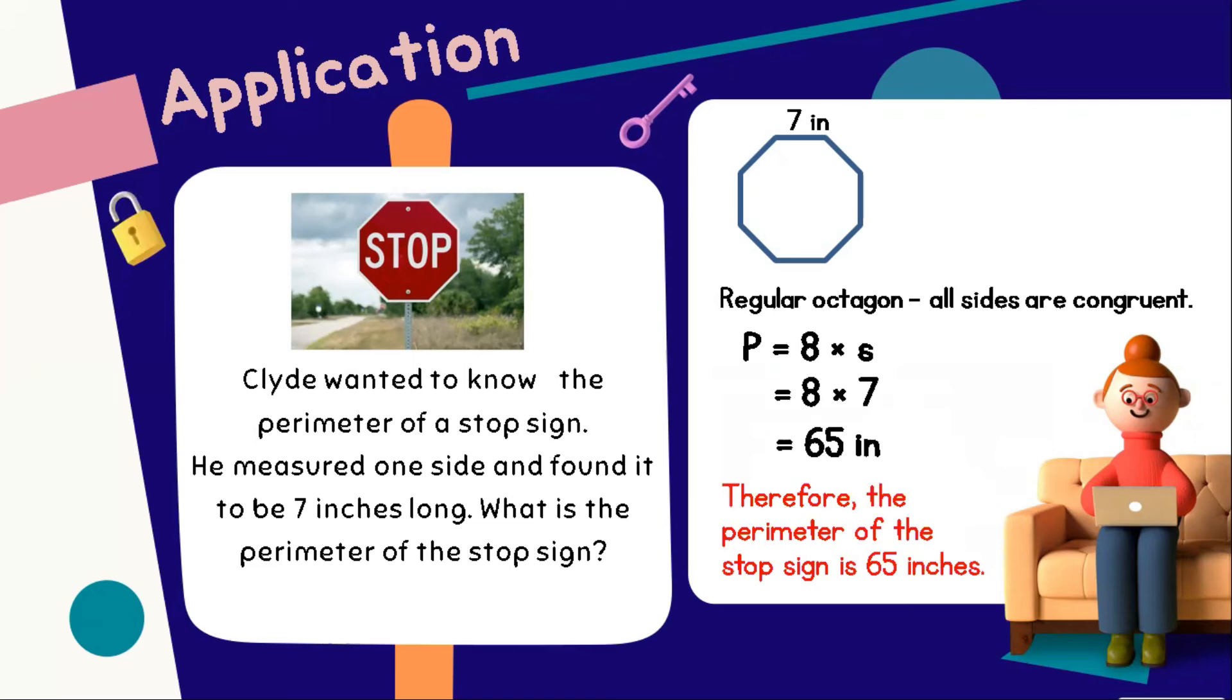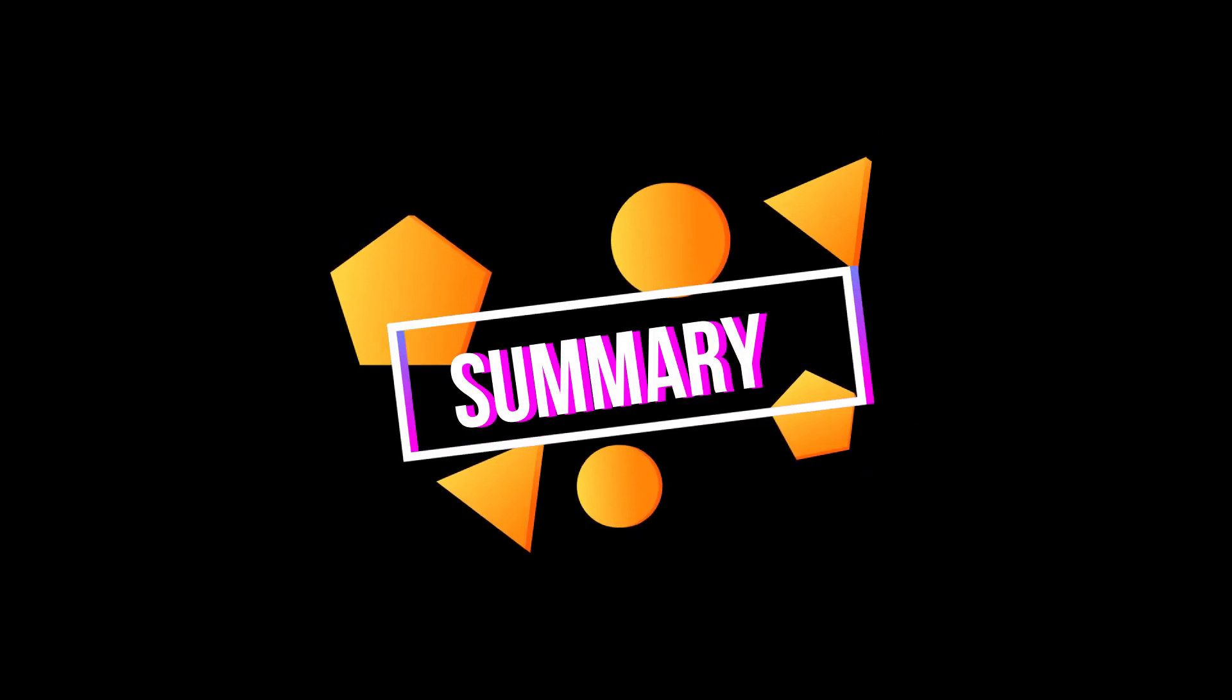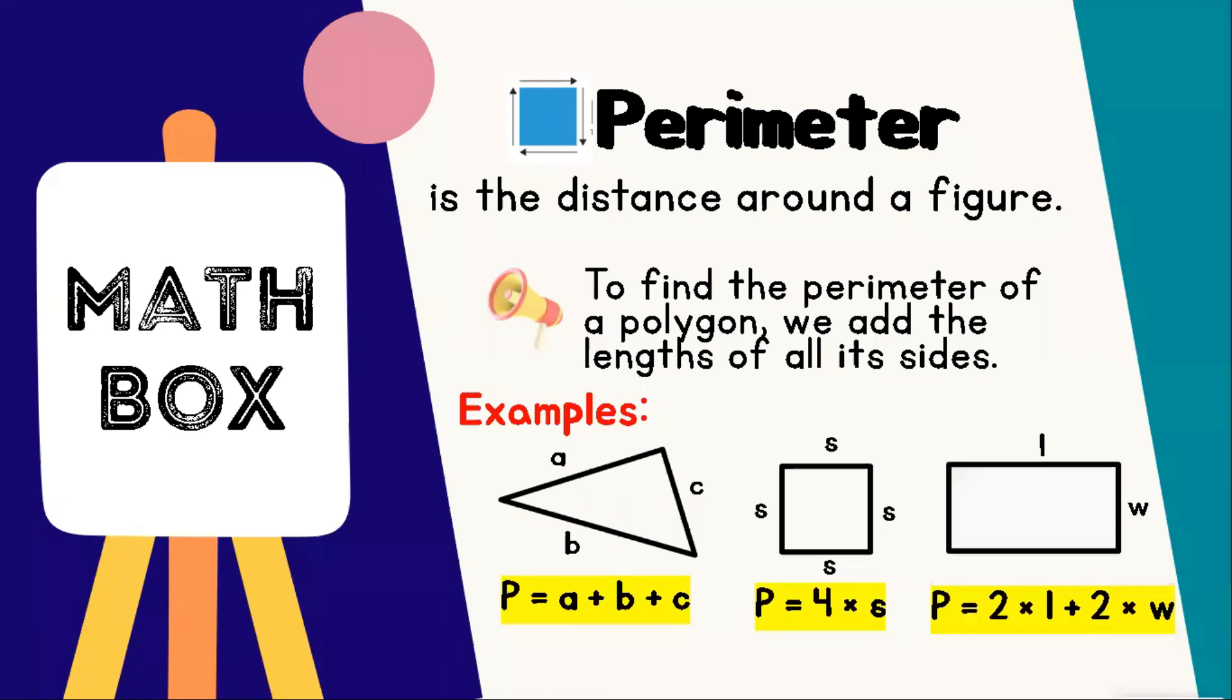Wow! You did an awesome job! Lastly, let's review and have our math backs at this point. When we say perimeter, this is the distance around a figure. To find the perimeter of a polygon, we add the lengths of all its sides.